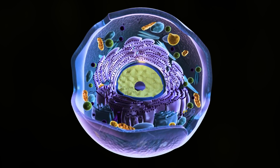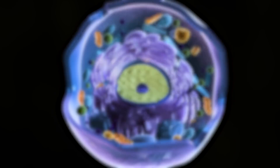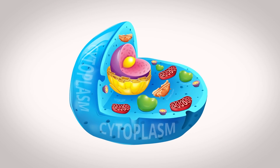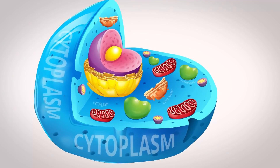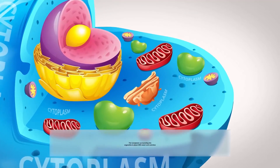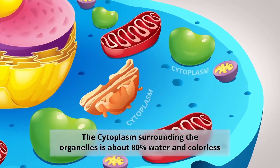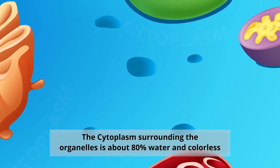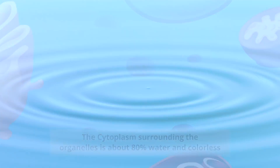Inside the cell, a gel-like substance called the cytoplasm is enclosed within the cell membrane that houses all of the organelles. The cytoplasm is about 80% water and usually colorless.